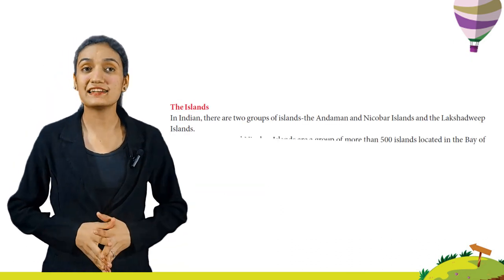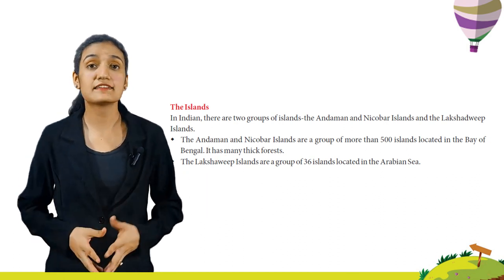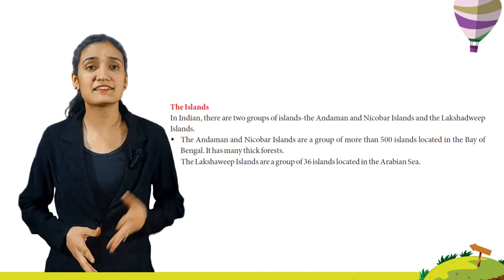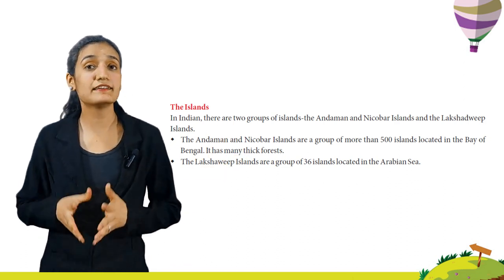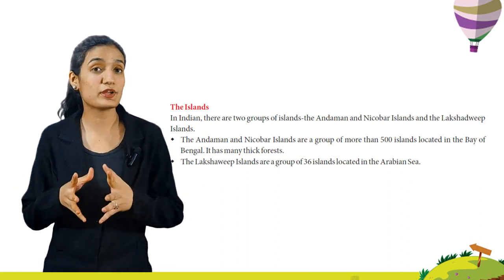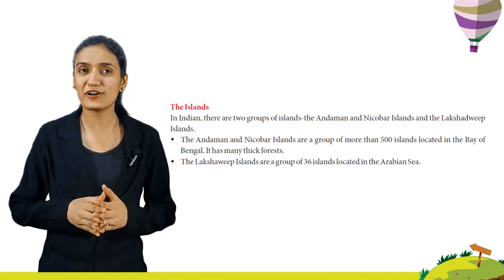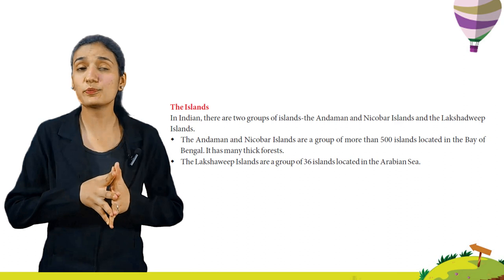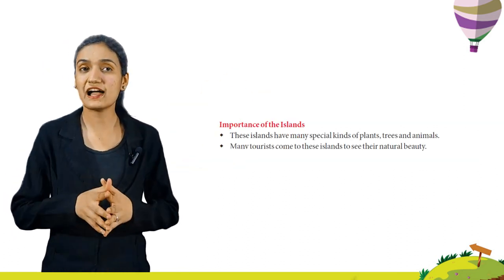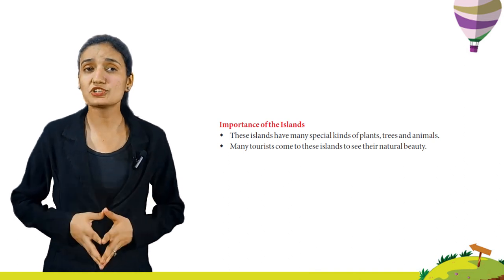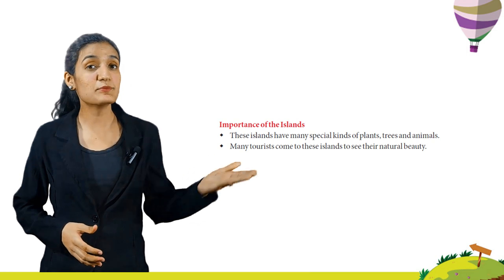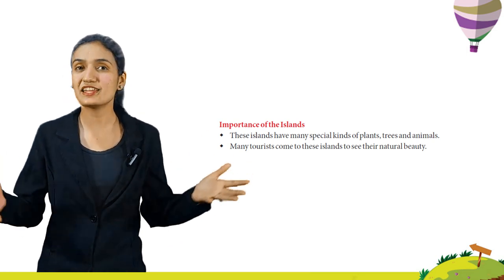In India, there are two groups of islands: the Andaman and Nicobar Islands and the Lakshadweep Islands. The Andaman and Nicobar Islands are a group of more than 500 islands located in the Bay of Bengal with many thick forests. The Lakshadweep Islands are a group of 36 islands located in the Arabian Sea. These islands have many special kinds of plants, trees and animals, and many tourists come to see their natural beauty.